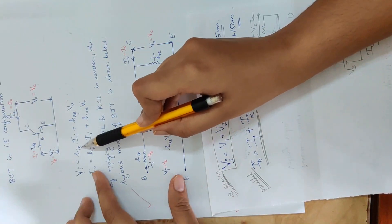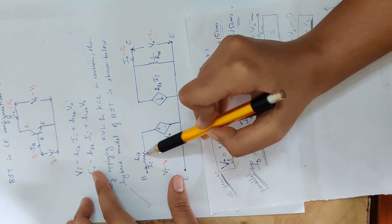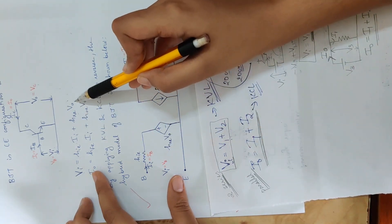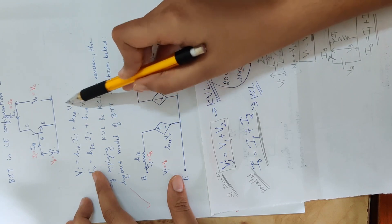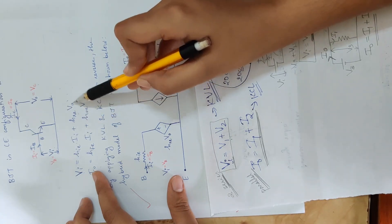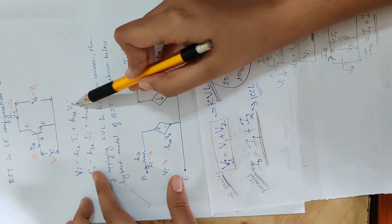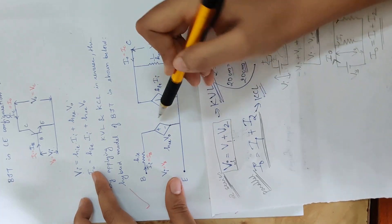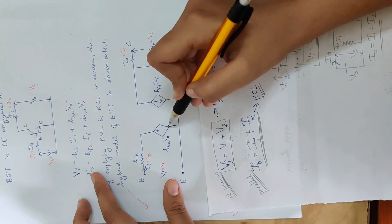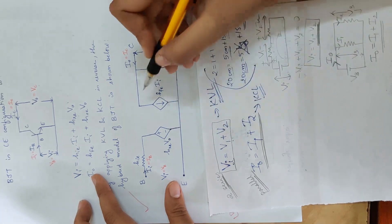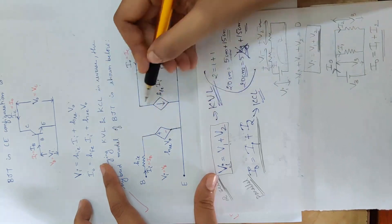Vi equal to HIE into Ii plus HRE into Vo. HIE is the impedance — a resistance. HRE into Vo is the voltage ratio times voltage. This is a dependent voltage source — represented by a triangle symbol.